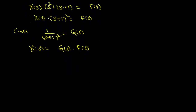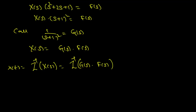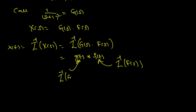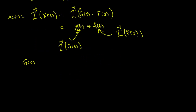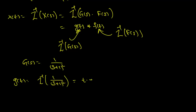Applying the inverse Laplace transform, we have x of t equals the inverse Laplace of X of s, which is the inverse Laplace of G of s times F of s. This is where we use the convolution theorem, which states that the inverse Laplace of G of s times F of s is g of t convolved with f of t, where f of t is the inverse Laplace of F of s and g of t is the inverse Laplace of G of s. Since G of s is 1 over (s plus 1) squared, g of t equals t times e to the power of minus t.